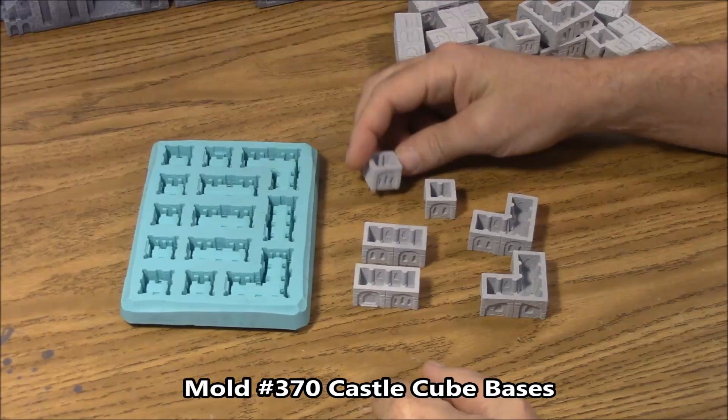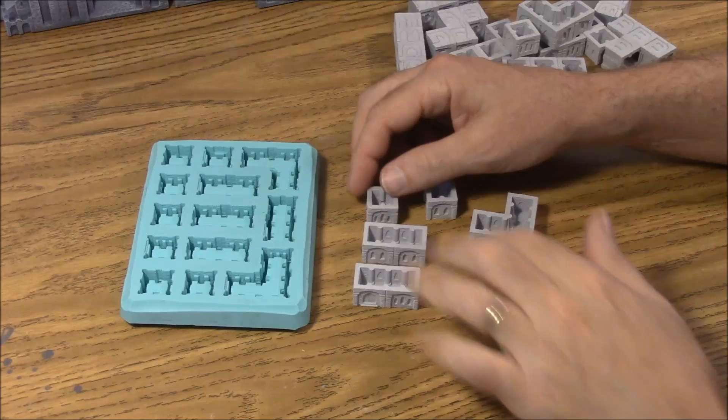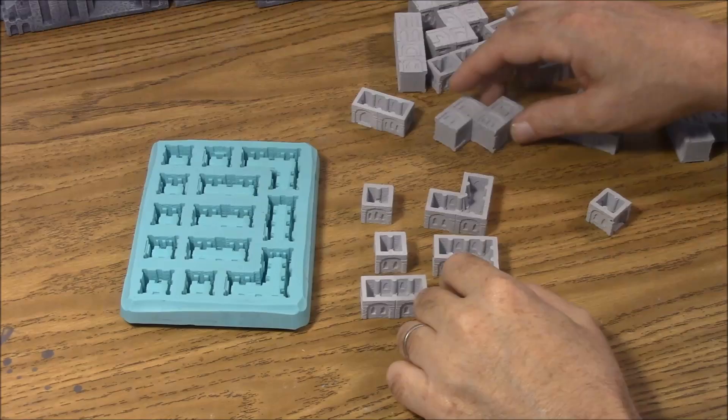Now the pieces on this mold are actually basically 3 quarters of an inch square. 3 quarters by 3 quarters, they're 5 eighths of an inch tall, which means they're slightly shorter than they are wide.